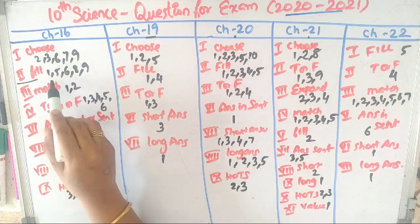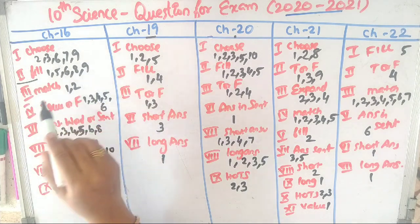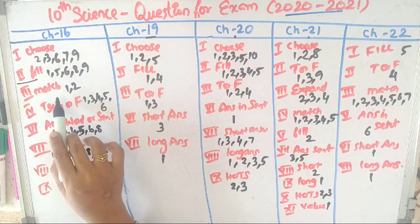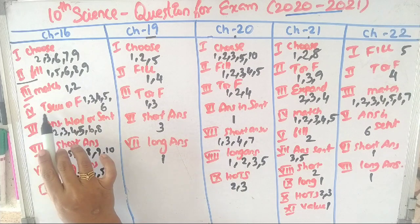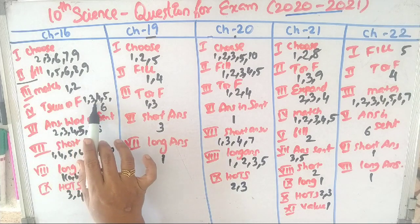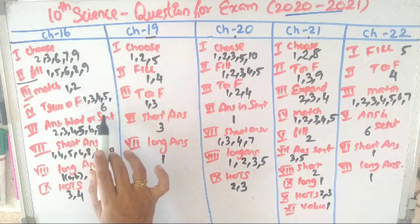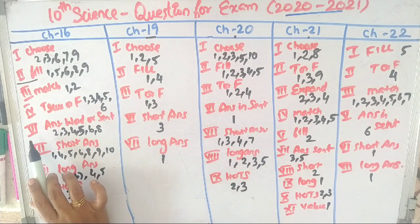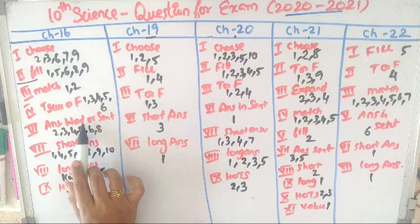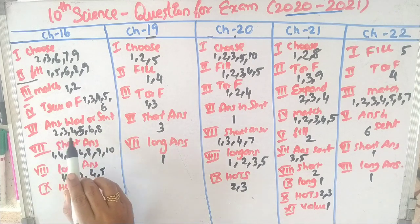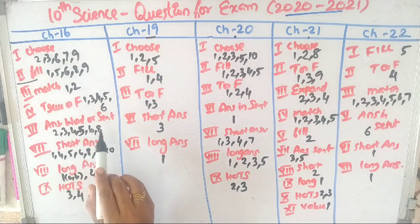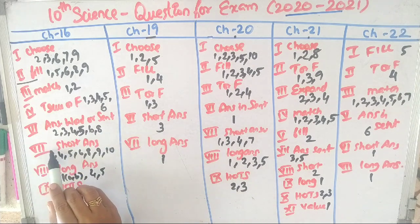Second, fill in the blanks is 1, 5, 6, 8, 9. Third, match the following is 1, 2. Fourth, true or false is 1, 3, 4, 5, 6. Answer in a word or sentence is 2, 3, 4, 5, 6, 8.